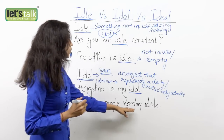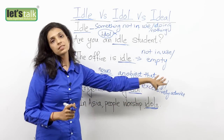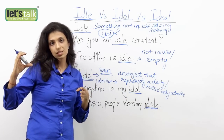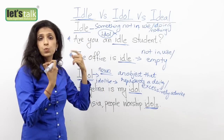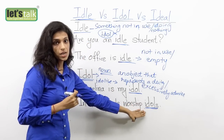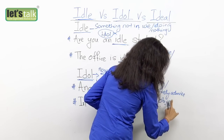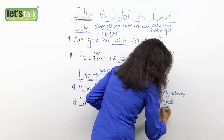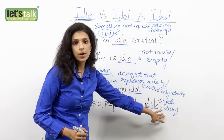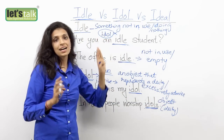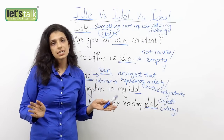In Asia, people worship idols. Here we are talking about an object that represents a deity. So you have various gods and goddesses, and people have small structures that they worship — we call them idols. So idol can mean that religious object, or a person you greatly admire. The pronunciation of both 'idle' and 'idol' is the same, but the meanings are completely different.